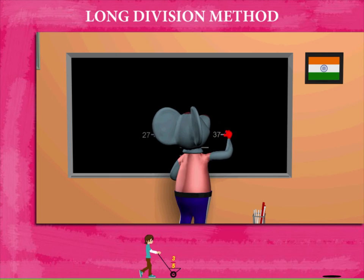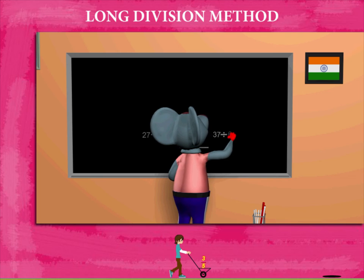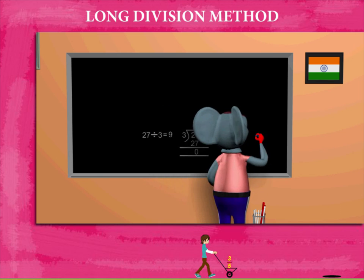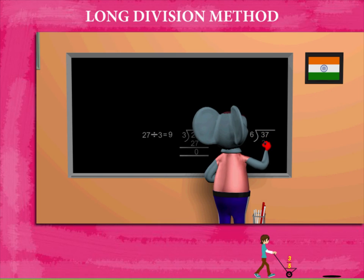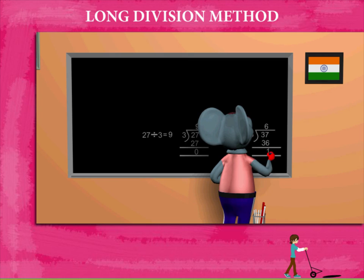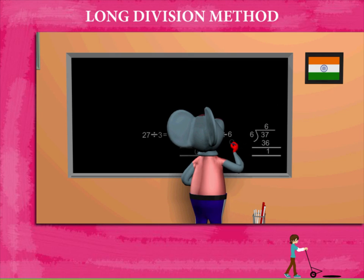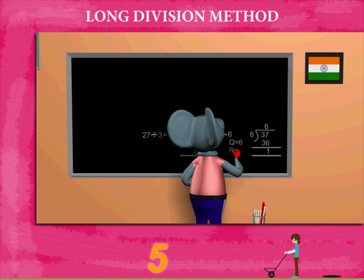Now he divides 37 by 6 using the same method. He gets 6 as the quotient and 1 as the remainder.